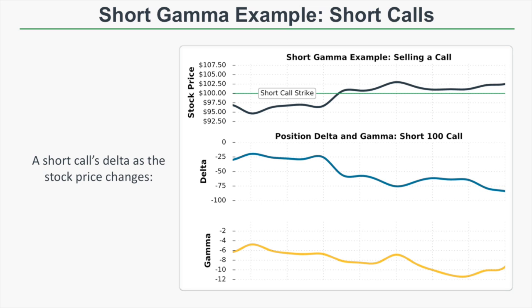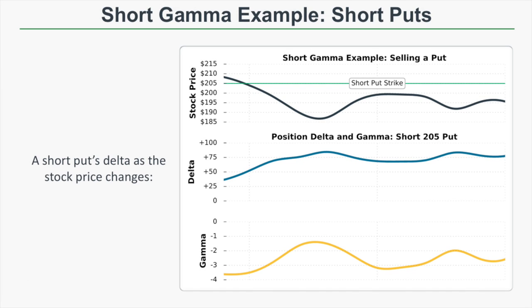This shows that when you're short a call and the stock price rises, your directional risk gets more and more negative. Now for the short put: it begins with a position delta of around plus 37.5. As the stock price falls through the short put's strike price, the position delta grows more and more positive — from plus 37.5 to positive 75. That first dollar decrease costs around 37 dollars, but when delta reaches positive 75, the next dollar decrease costs 75 dollars.